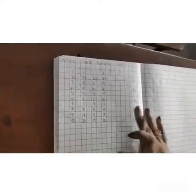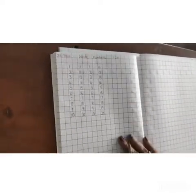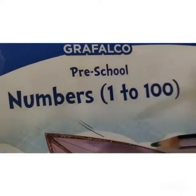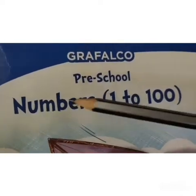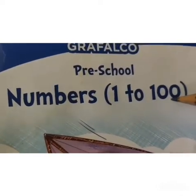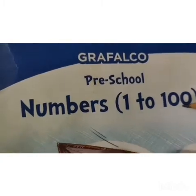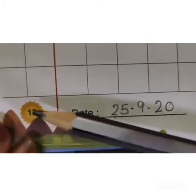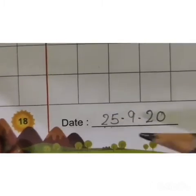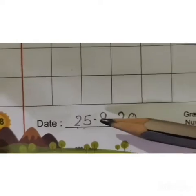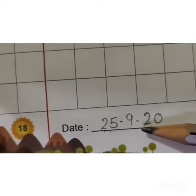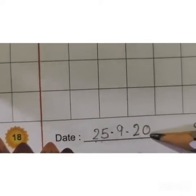Understood children? This is your math homework. Yes children, this is your small workbook numbers 1 to 100. Open to page number 18. Write the date 25-9-20.